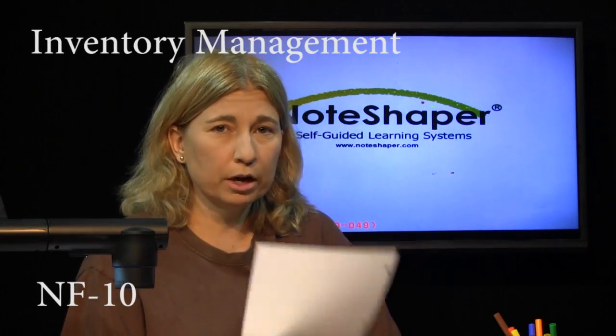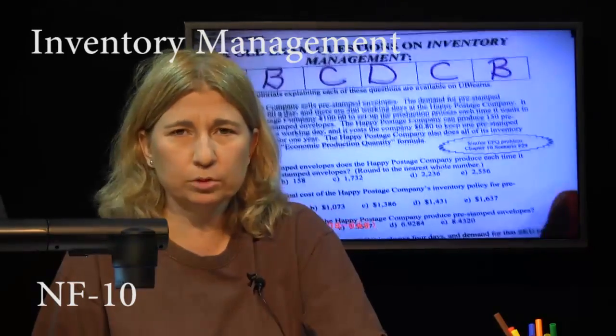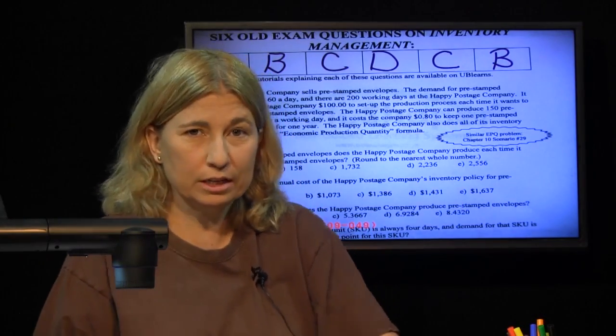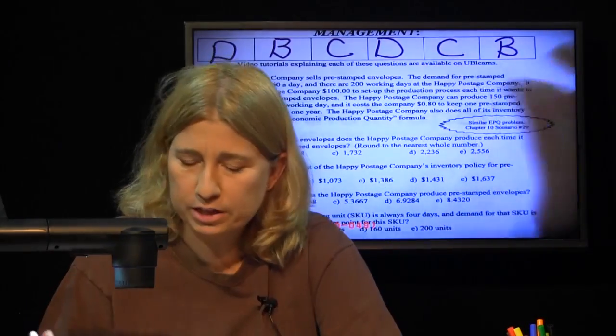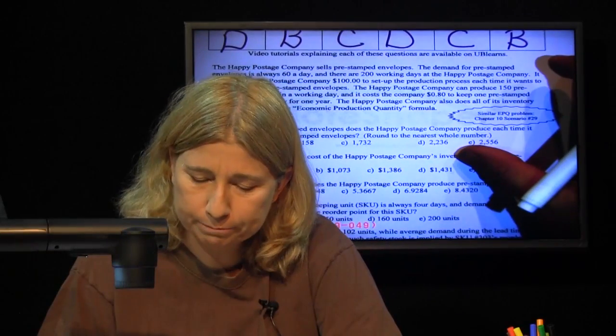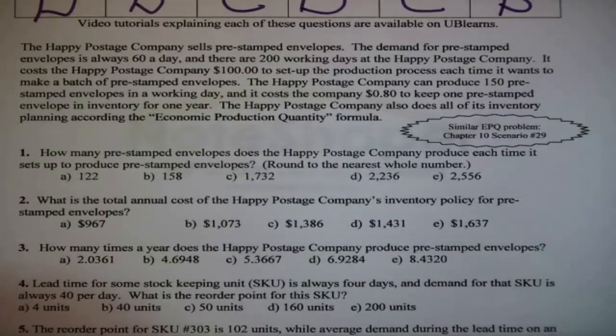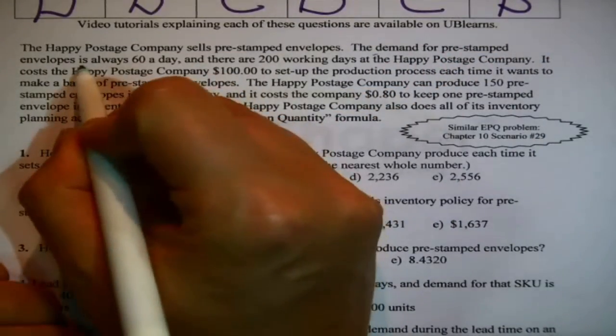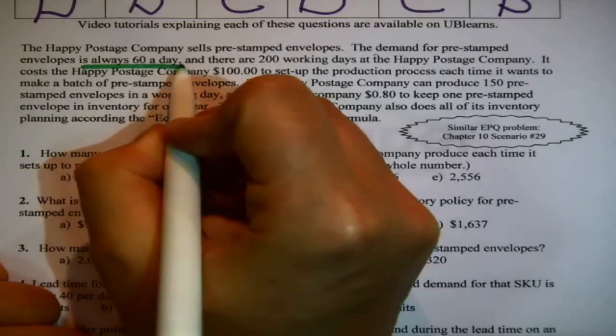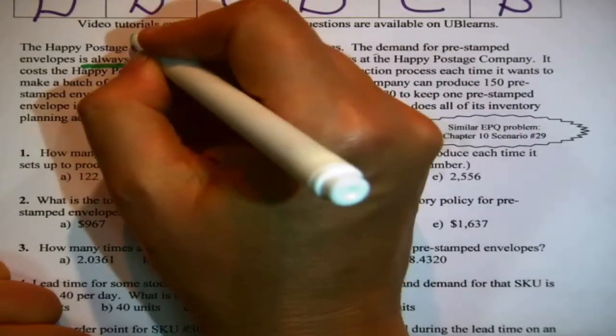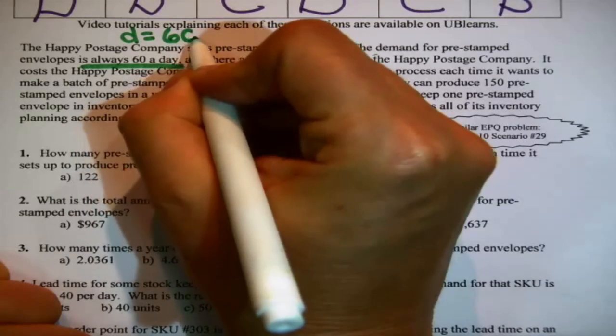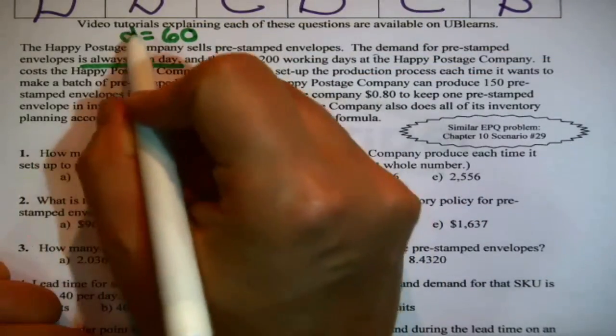With Chapter 10 inventory models, it's important to be able to diagnose the difference between the EOQ and the EPQ model. This particular old exam question is a good example of that. Let's look. The Happy Postage Company sells pre-stamped envelopes. That's interesting. The demand for pre-stamped envelopes is always 60 a day. You always need a bunch of parameters to plug into those inventory management formulas, so it helps to start collecting them early.